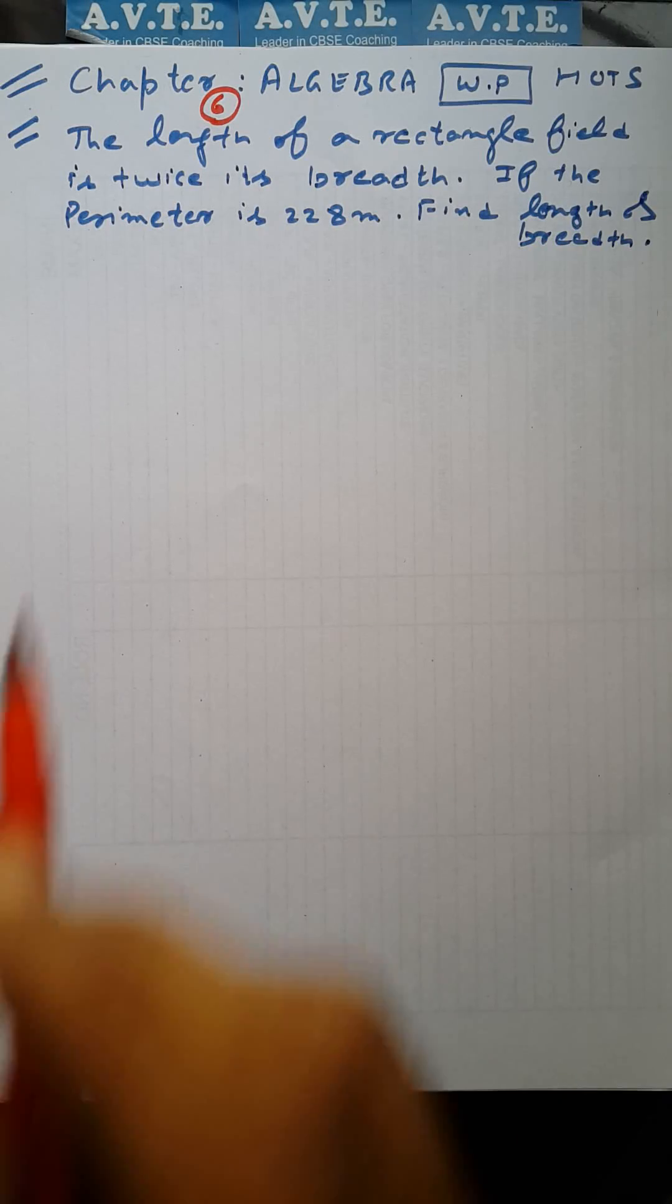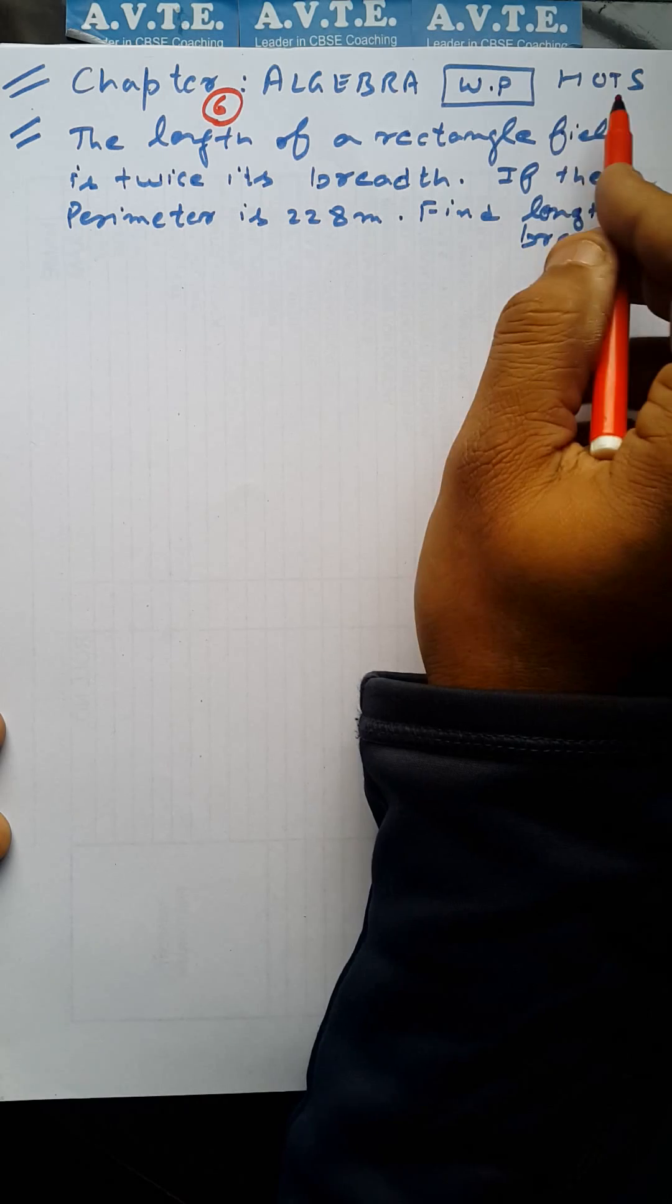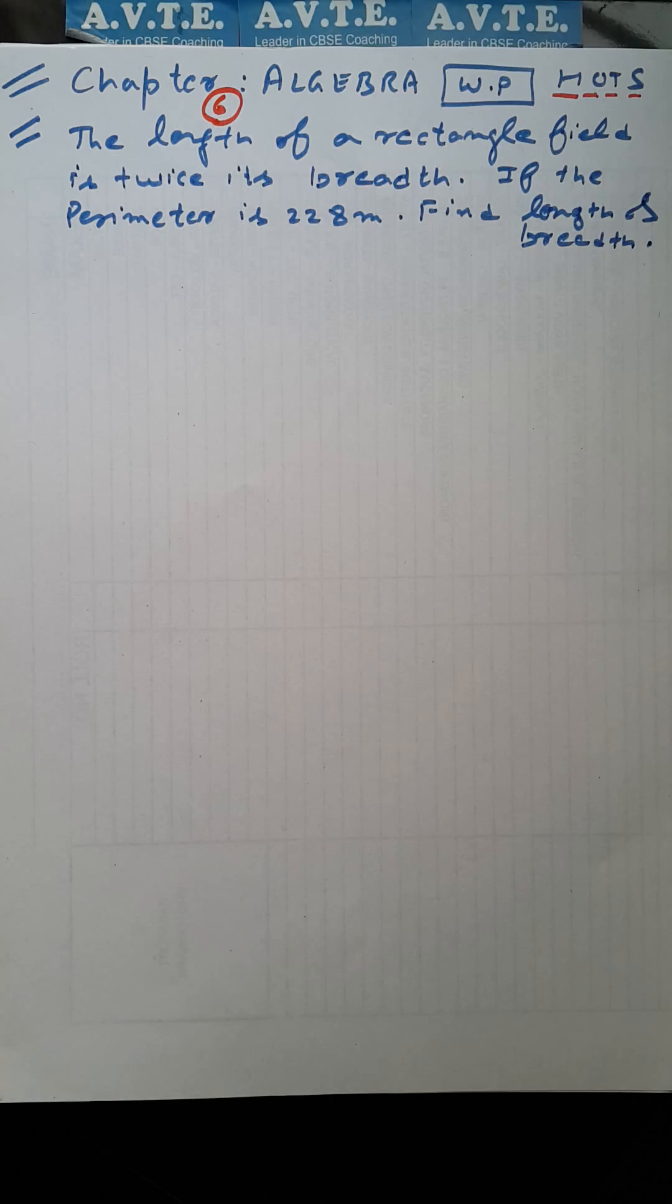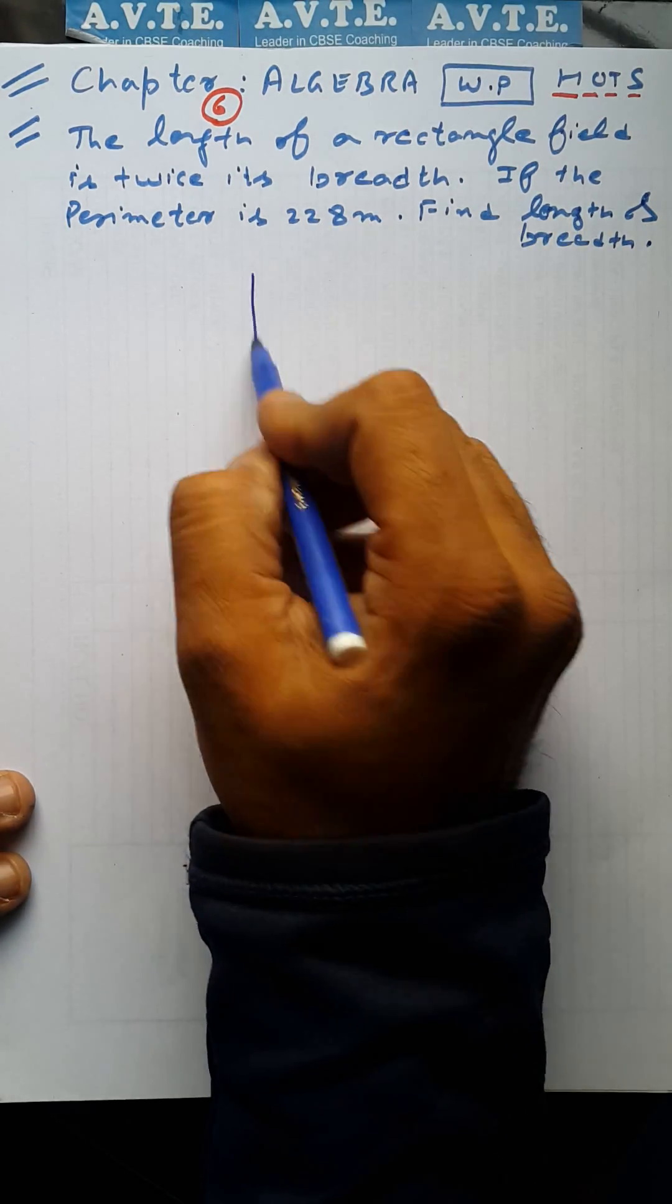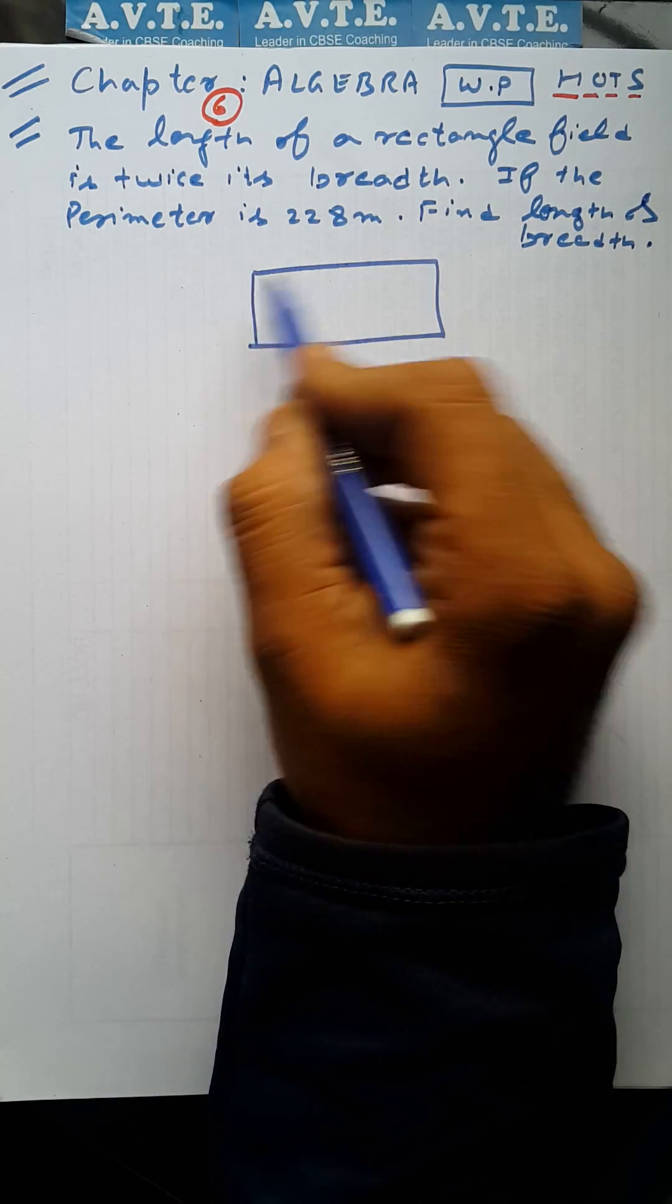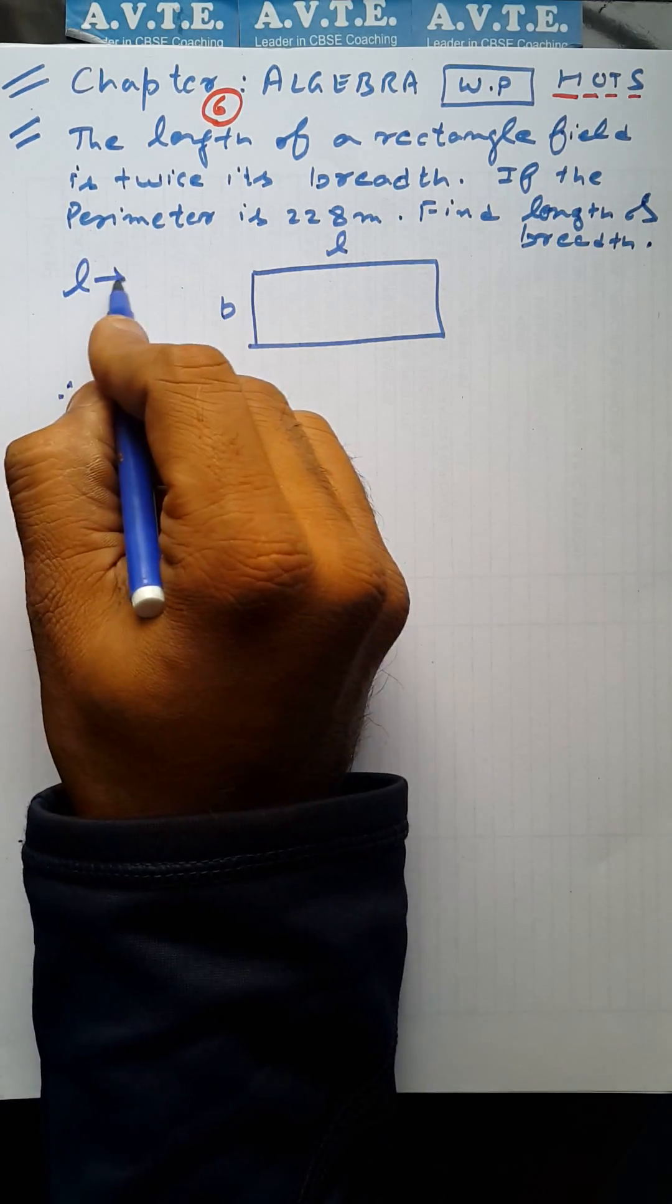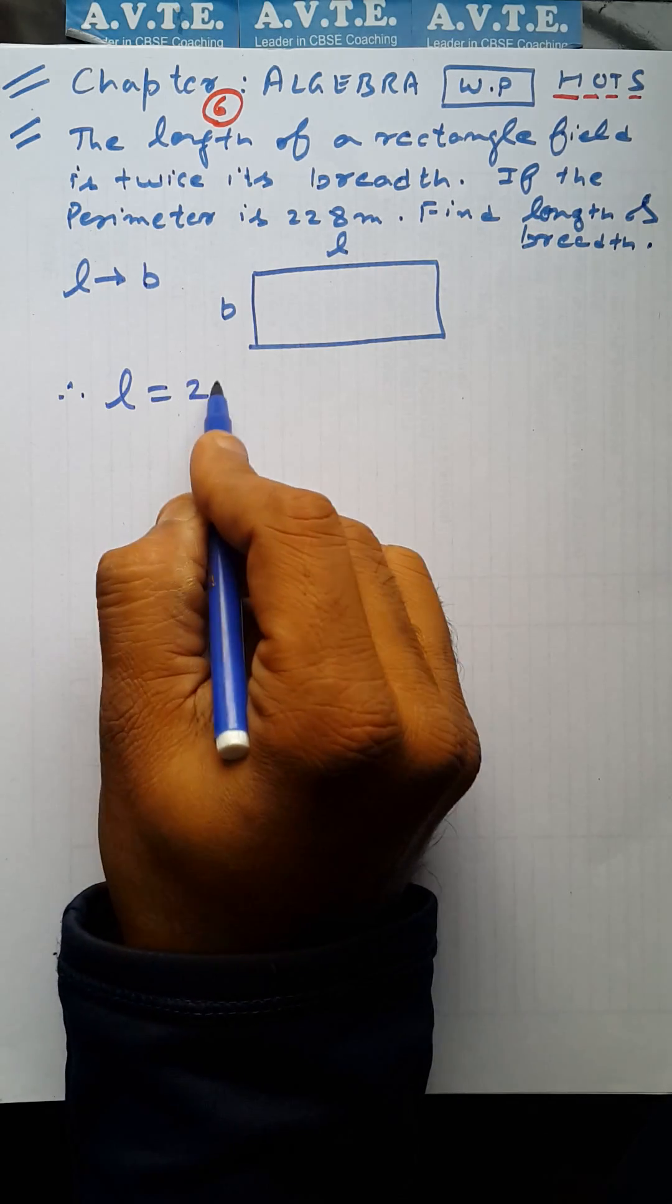Dear students, now we are taking class 6 topic: algebra word problems in the category of high-order thinking skills. The question is: the length of a rectangle field is twice its breadth. The length of rectangular field is twice its breadth means length is dependent upon breadth.